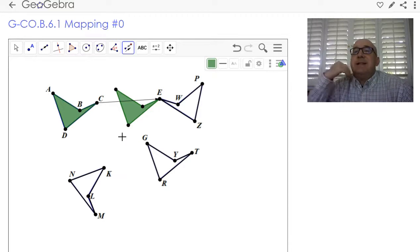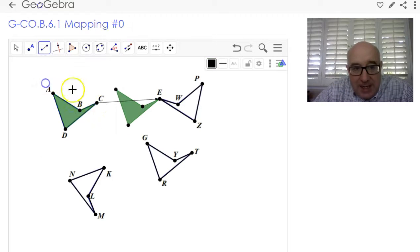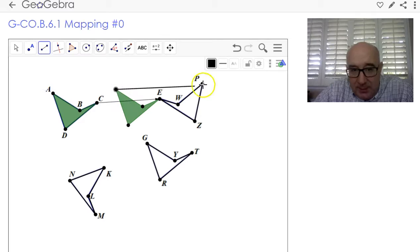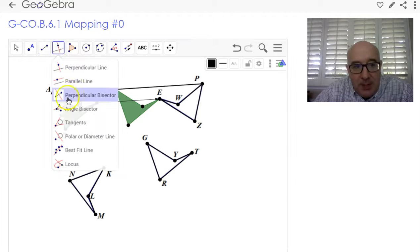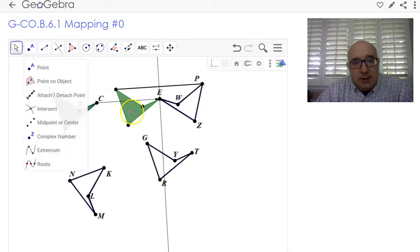Now I can do a reflection. The reflection would be over the perpendicular bisector of A prime. This one slid here and P. So if I do a perpendicular bisector of that, now I'm able to take this guy. Let me change this guy's color. Let's make him a beautiful orange.